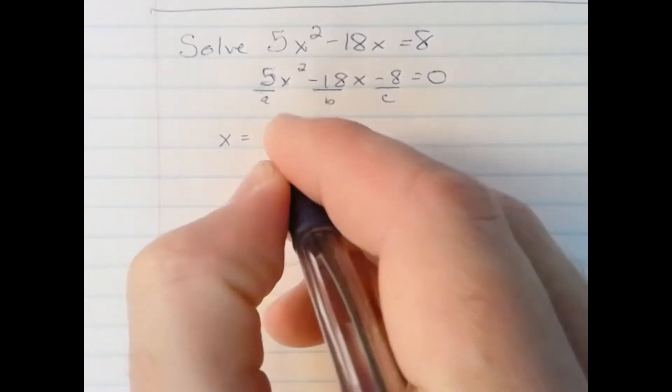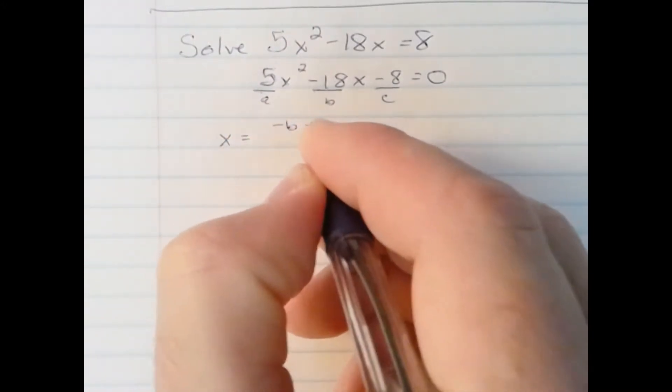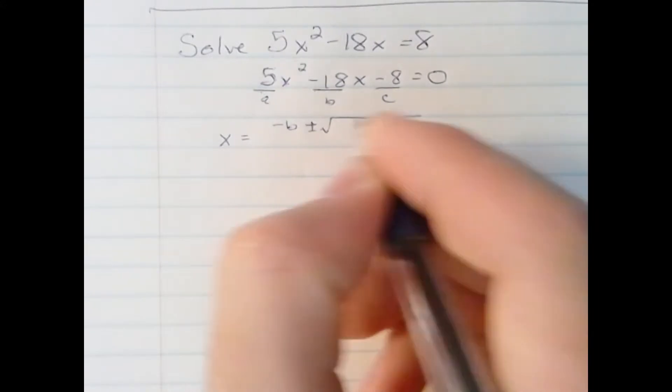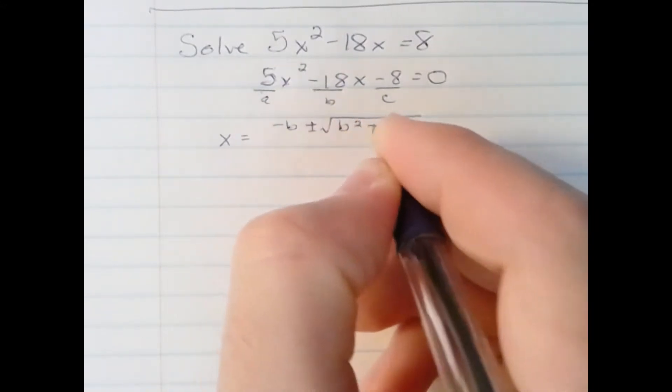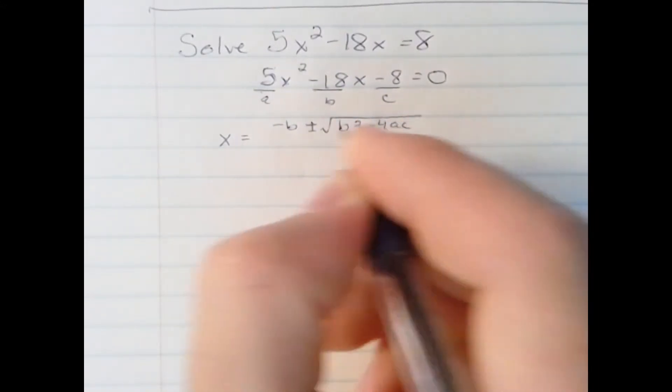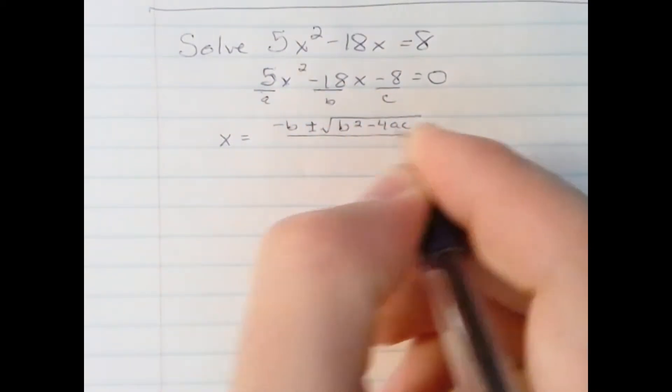If you remember, negative b plus or minus square root b squared minus 4ac, all over 2a.